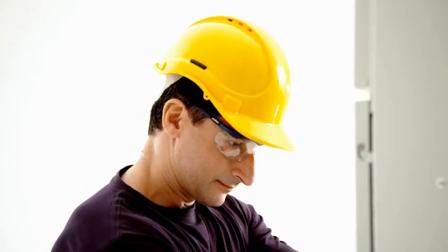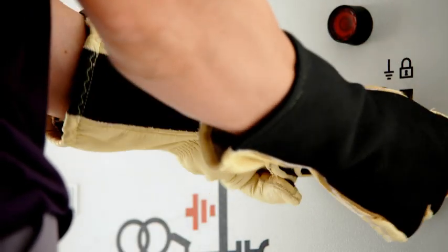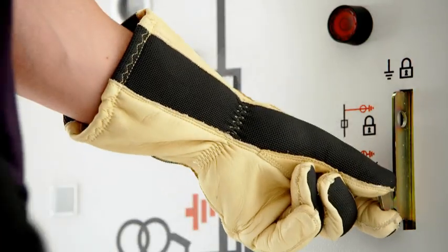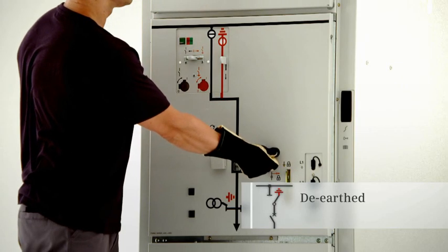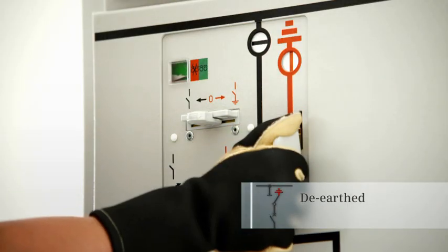To de-earth this feeder, the padlock must first be removed rendering the locking device inoperative. The circuit breaker can then be switched to the open position and hence the feeder can be de-earthed.